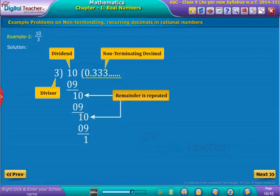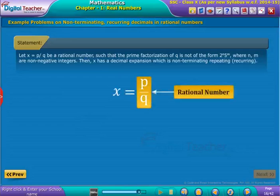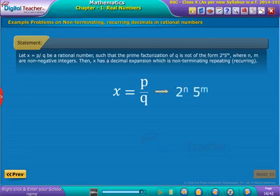From the above two examples, let us state a theorem: Let x = p/q be a rational number such that the prime factorization of q is not of the form 2^n × 5^m, where n and m are non-negative integers. Then x has a decimal expansion which is non-terminating, repeating (recurring).